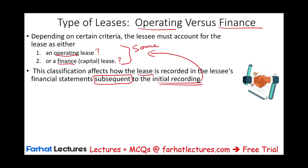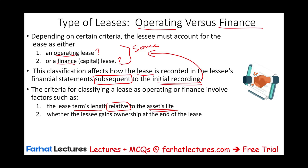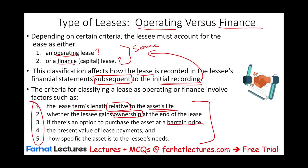What criteria do we take into account? We involve the lease term — how long is the lease term relative to the asset life. Whether ownership transfers to the lessee at the end of the lease. Whether there is a bargain purchase option. We look at the present value of lease payments, and how specialized the asset is to the lessee's need. Those are the factors that influence whether a lease is operating or finance.